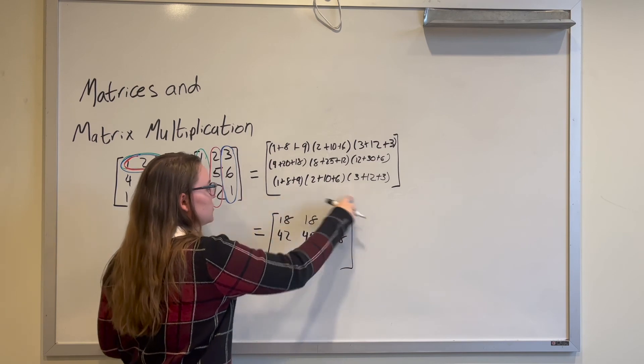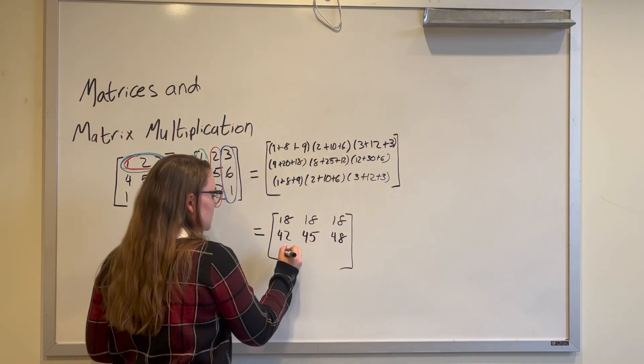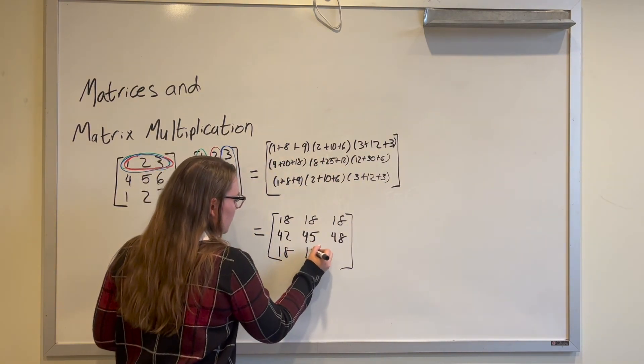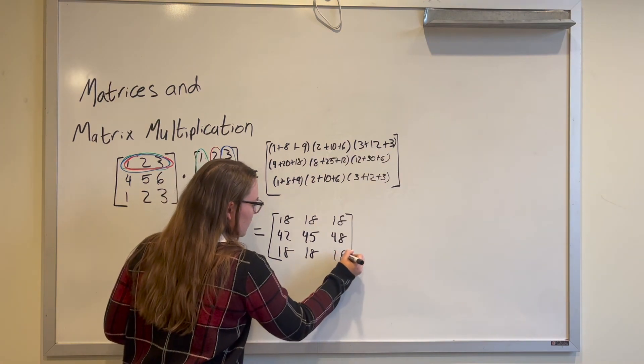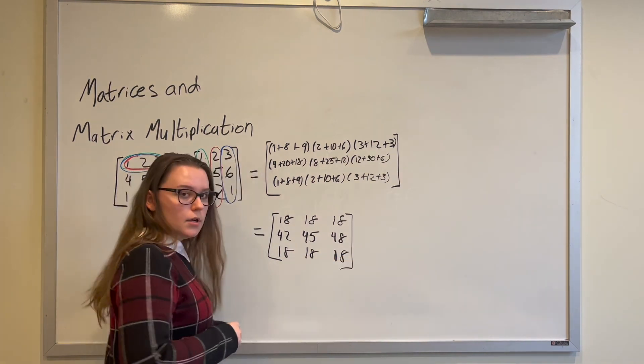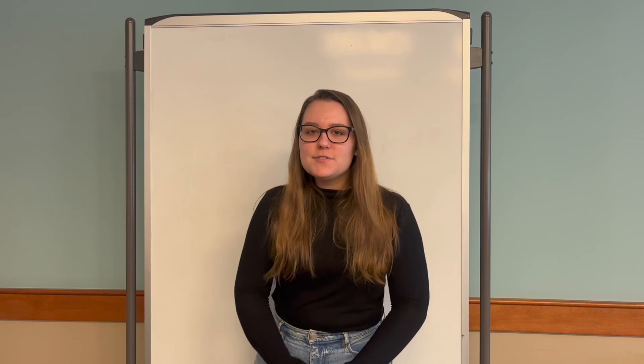And then this row is the same as this row, so it will just be the same. 18, 18, and then we are done with our matrix multiplication. Thank you so much for watching.